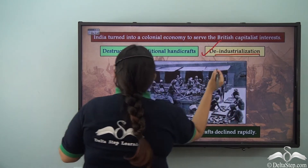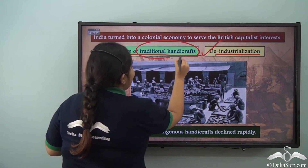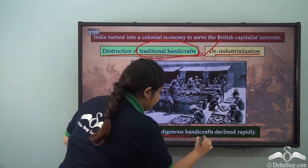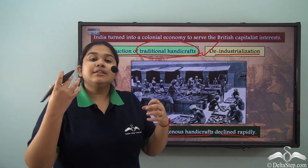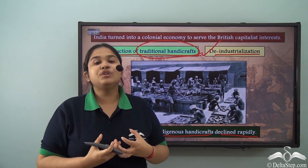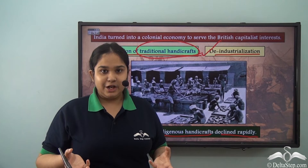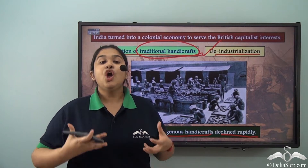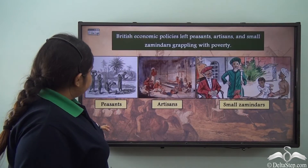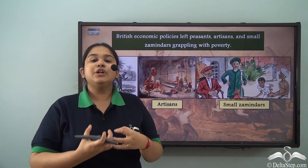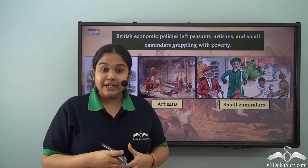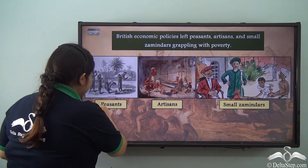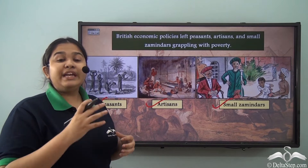De-industrialization refers to the destruction of traditional handicrafts and traditional methods of income in India. The demand for indigenous handicrafts declined rapidly because the British were not even allowing Indian goods in Indian markets — only British goods were available. This caused automatic de-industrialization, a destruction of Indian industries, affecting peasants, artisans, and small zamindars, all falling into the clutches of poverty.